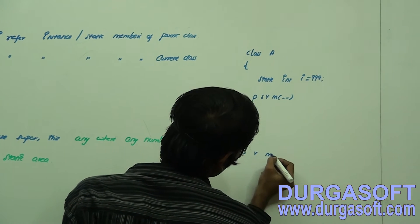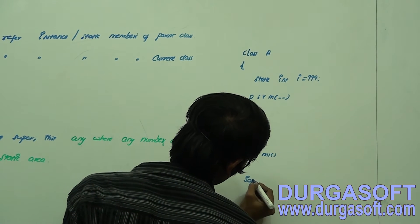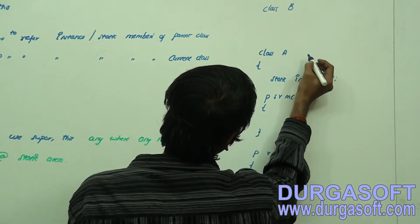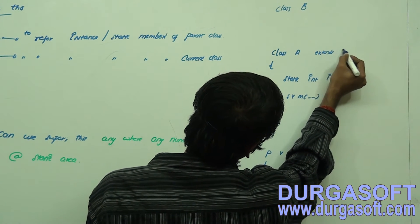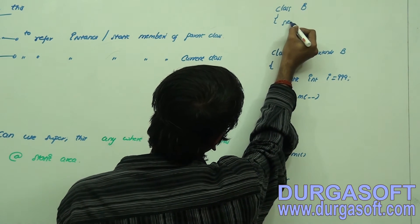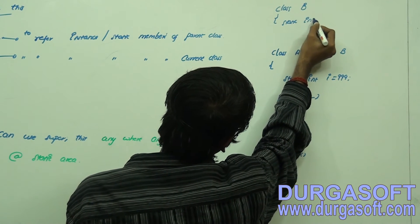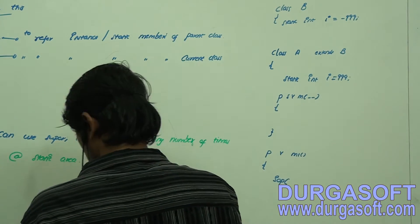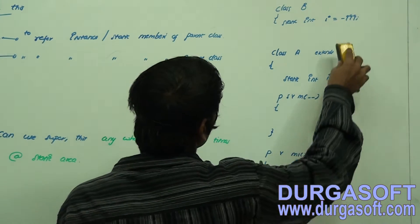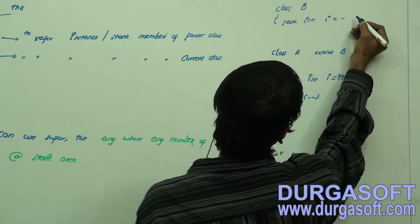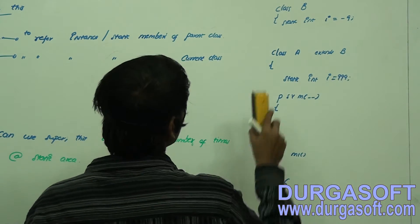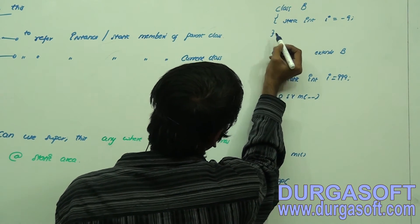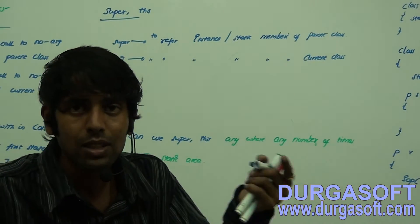I have a public static void main with a String array, and I'm going to define an instance method — public void m1. Now I take a parent class called class B, and class A extends B. In class B I have static int i equals -9, which is also static.